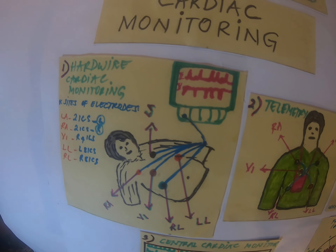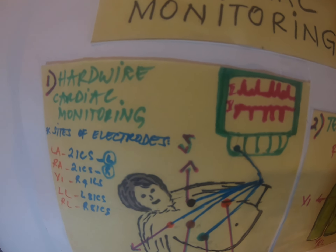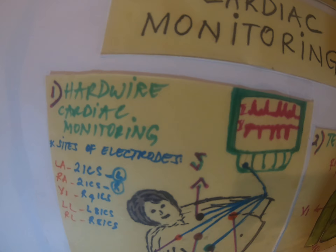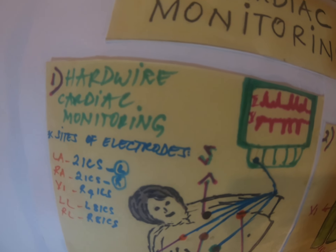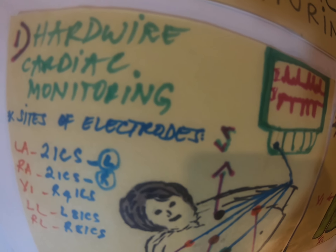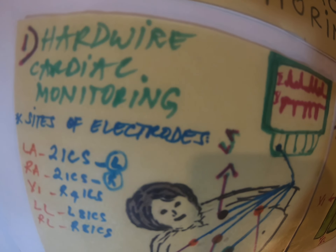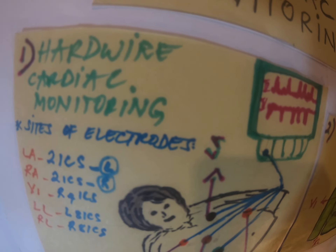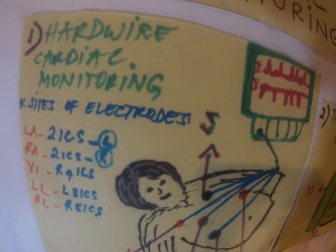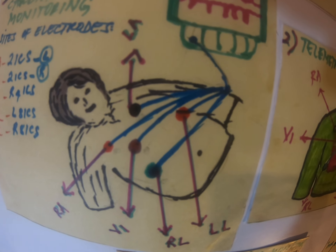With cardiac monitoring, there are two ways to do that: hardwire and telemetry. Hardwire cardiac monitoring is for patients who are compromised — respiratory-wise and cardiac. They're better off with hardwire monitoring as they're mostly in bed. For hardwire, we utilize five electrodes.